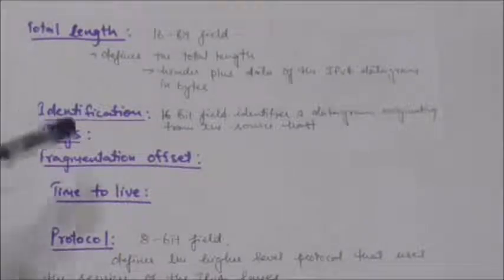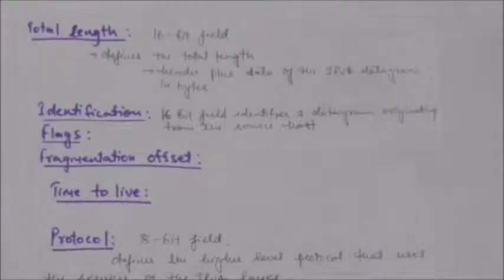Today the TTL field is used to control the maximum number of hops visited by the datagram. If the value after being decremented becomes zero, the router discards the datagram.